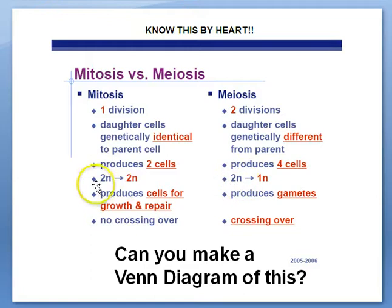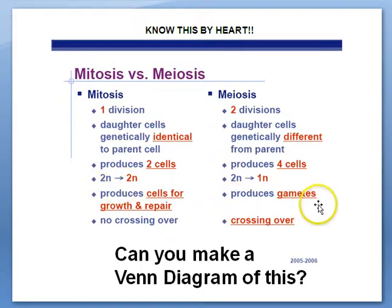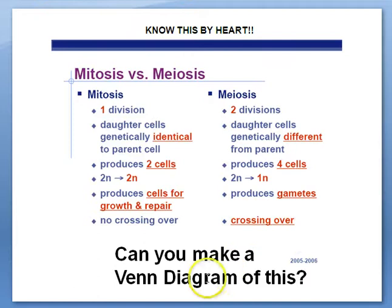Mitosis and meiosis both start with a diploid cell (2N). However, at the end of mitosis you still have two sets of chromosomes in the two cells. During meiosis, you only have one set of chromosomes being made. Mitosis is for body cells — somatic cells — also for growth and repair. Any cell that's not a sex cell undergoes mitosis. In meiosis, it's just producing gametes: sperm and egg. In mitosis there's no crossing over; in meiosis there is crossing over.